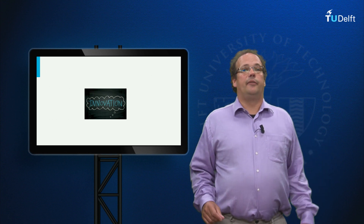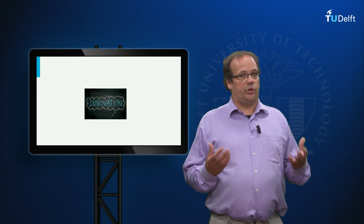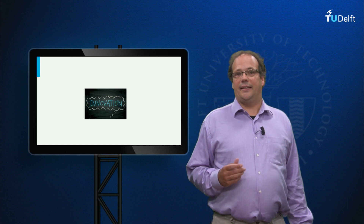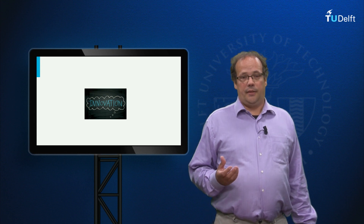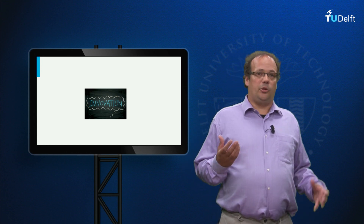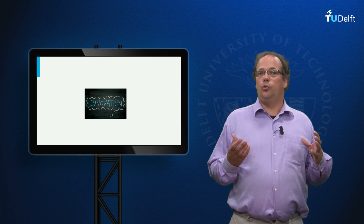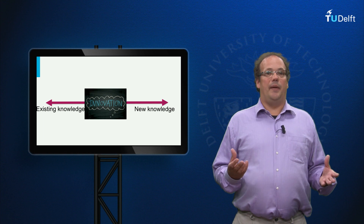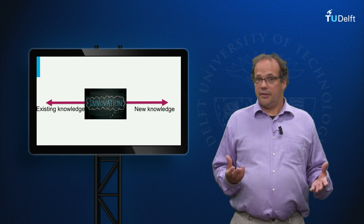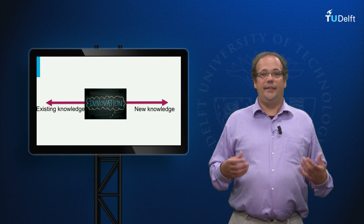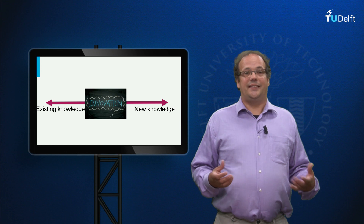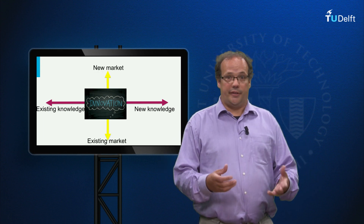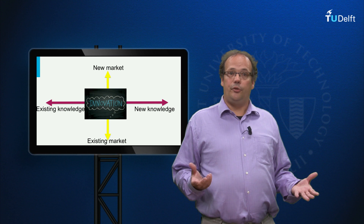In this lecture we will focus on a taxonomy for innovation that was developed by Abernathy and Clark in 1985. This taxonomy classifies innovation along two axes. The first axis is whether the innovation is based on existing knowledge or whether it requires new knowledge. The second axis is whether the innovation is intended for current users or for new users.